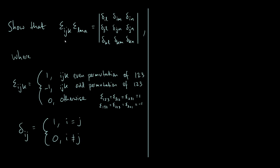The identity we are aiming to prove links the product of two epsilons to the determinant of a matrix filled with various deltas. We multiply together epsilon_ijk and epsilon_lmn, and this equals the determinant of a matrix where the deltas in the top row all have index i, the second row index j, and the third row index k. Similarly, the first column has common index l, the second column index m, and the third column index n.